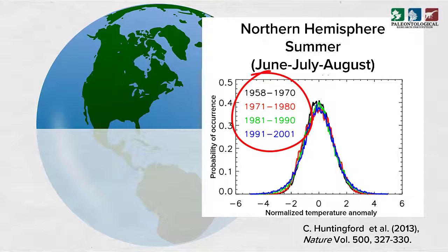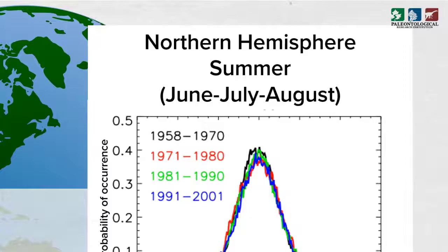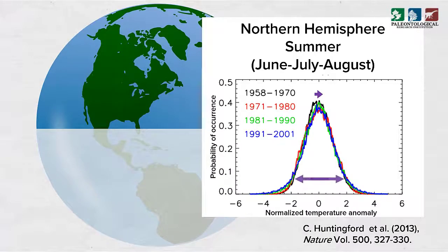Over about four decades in the late 20th century, we see that from the 1960s to the 1990s, the distributions have shifted toward warmer temperatures and have become a bit wider, indicating more temperature variability.